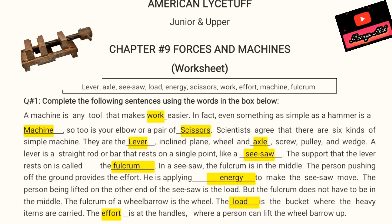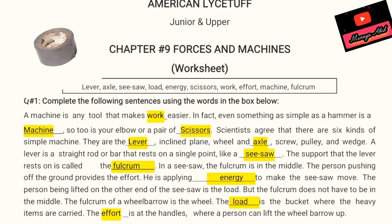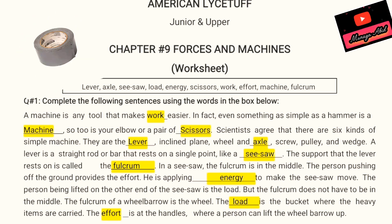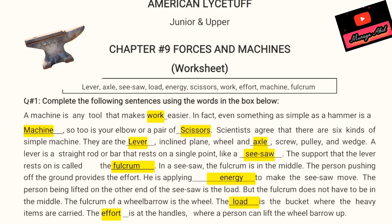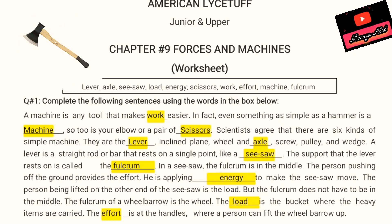The fulcrum of a wheelbarrow is the wheel. The load is the bucket where the heavy items are carried. The effort is at the handles where a person lifts the wheelbarrow up. You have to write all the yellow highlighted words in the blanks. The above box is the word bank box — I have put all the words correctly in their proper blanks for you. You have to learn this paragraph, as it is very helpful.